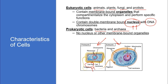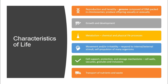Eukaryotic cells may or may not have a cell wall; those with cell walls are generally plant cells, while animal eukaryotic cells do not have a cell wall. In prokaryotic cells like bacteria or archaea, no nucleus and no membrane-bound organelles are found. The characteristics of life include reproduction — genome composed of DNA packed into chromosomes that produce offspring sexually or asexually — which is one of the prime characteristics.